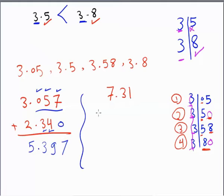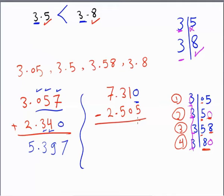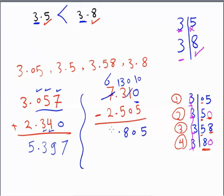Another example: 7.31 minus 2.505. Check the decimal part — the first number has two decimal digits, the second has three, so I add zero to make 7.310. Then: 0 minus 5, I can't do that, so I borrow — it becomes 10 minus 5 equals 8, then 13 minus 5 is 8... wait, 6 minus 2 equals 4. The result is 4.805.